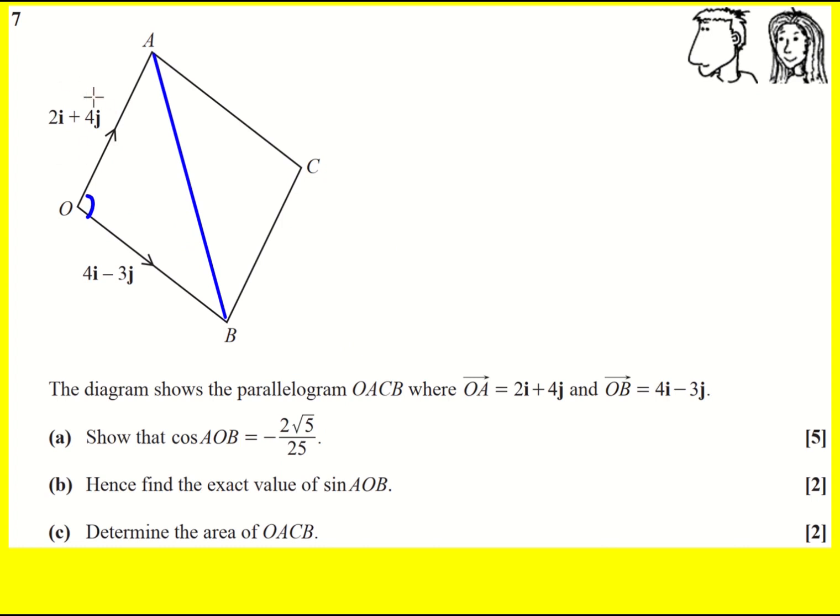So if I want to work out this side length, it's going to be 2 squared plus 4 squared square rooted, which is root 20. Actually I'm going to write root 20, but I'm then going to simplify it, so root 20 is root 4 times root 5, so it's going to be 2 root 5. And then over here we've got 4 squared plus 3 squared square root, so that's the classic 3-4-5 triangle. This length is going to be 5.